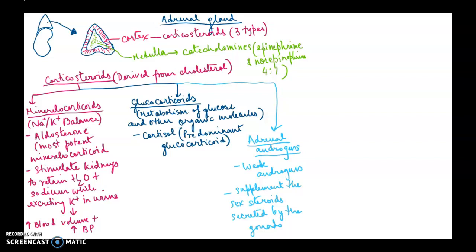The second corticosteroid is glucocorticoids, which play a major role in the metabolism of glucose and other organic molecules. Cortisol is the predominant glucocorticoid. The third type is adrenal androgens, which are basically weaker androgens that supplement the sex steroids secreted by the gonads.